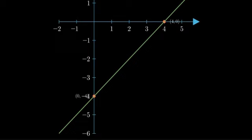Let's verify that this is correct. The slope of this line should be one, since the coefficient of x is one. We can verify this by counting. As we rise one unit, we run one unit.